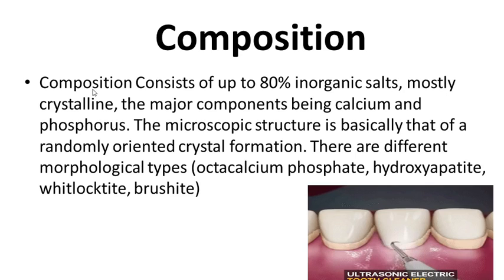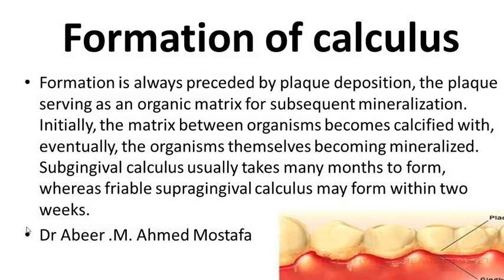Composition: calculus consists of up to 80 percent inorganic salts, mostly crystalline, with the major components being calcium and phosphorus. The microscopic structure is basically that of a randomly oriented crystal formation. There are different morphological types including octacalcium phosphate, hydroxyapatite, whitlockite, brushite, and so on.